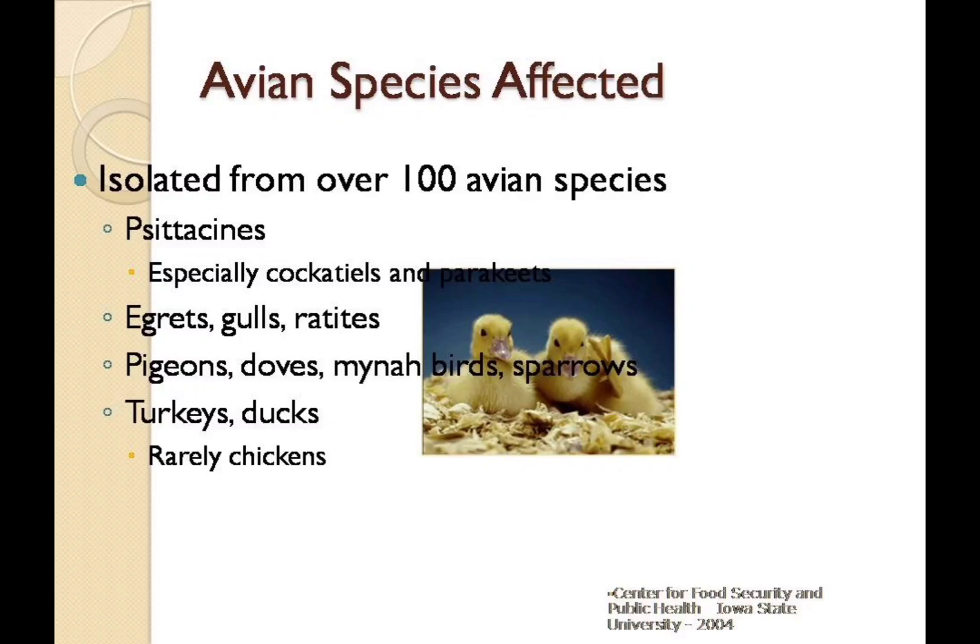Chlamydophila psittaci has been isolated from over 100 species of birds, most commonly from the psittacine, or parrot-like birds, especially the cockatiels or parakeets. The organism has also been identified in pigeons, chickens, turkeys, ducks, egrets and gulls. There have been outbreaks on turkey and duck farms associated with human illness. It has also been seen in raptors.